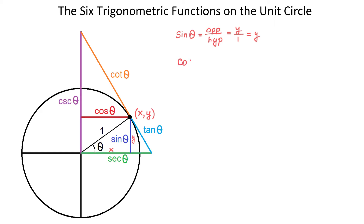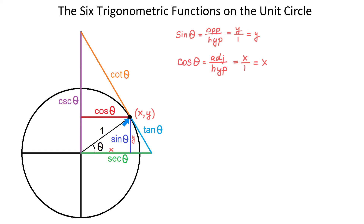Cosine of theta, by definition, is the adjacent side divided by the hypotenuse. In this triangle, the adjacent side is x, and the hypotenuse is 1. Then cosine of theta is x over 1, which equals x. So here we have x, and this is the value of cosine, and because this line segment is equal to this one, we can say that this line segment represents cosine of theta.